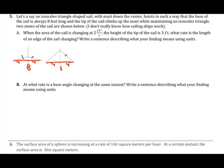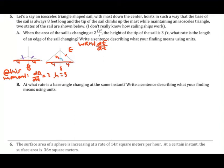Part A: when the area of the sail is changing at 2 feet squared per second and the height of the tip is 3 feet, what is the rate at which the edge length of the sail is changing? Label the slanted side E for edge and the center line H. We know dA/dt equals 2 and h equals 3 at this moment. Using the Pythagorean theorem, 3 squared plus 4 squared equals E squared, so E equals 5 at this instant.